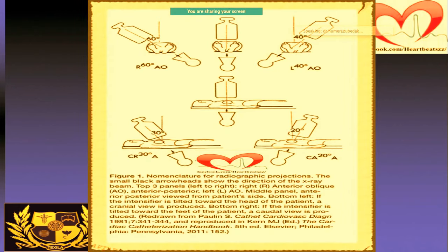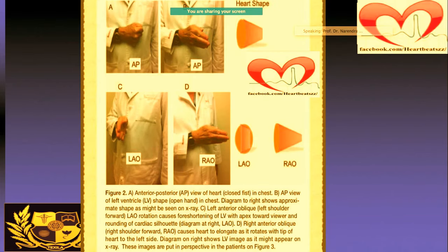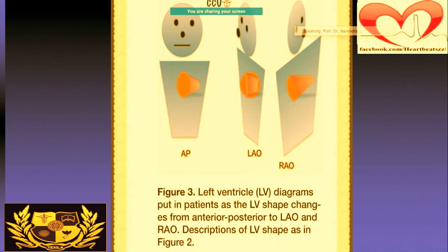These things can be seen beautifully in the diagram — LAO, RAO, cranial, and caudal. Cranial means towards the head of the patient; caudal means away from the head. These are other images showing how the coronary vessels look. This is more of a memory aid — not a standard teaching — but you can think about it if you want to learn in an easy way.